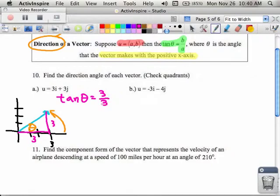If you have the tangent of something and you're actually looking for the angle, you have to hit the tangent inverse. Very good, Taylor. Tangent inverse. So theta is the tangent inverse of 3 over 3, and you find out that's 45 degrees.